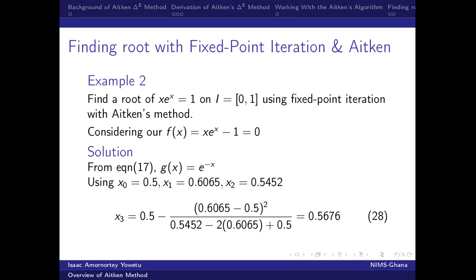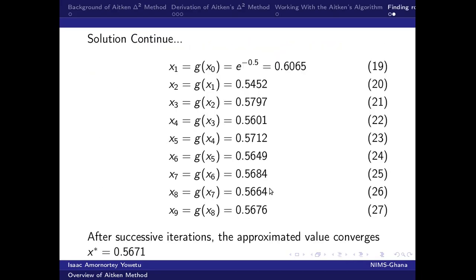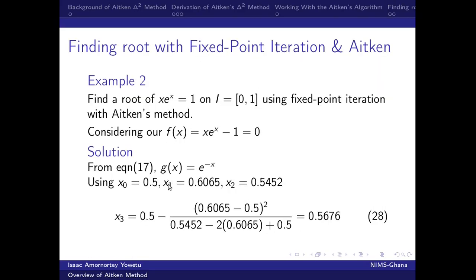We now move ahead to look at solving the same problem. But this time around, we want to incorporate the Aitken's method into the fixed point iteration. So, with our initial guess here, with our initial guess x0 here, from the fixed point iteration, we happen to get our x1, x2, which we have it here. We now, getting these three successive terms, we substitute it into the Aitken's algorithm, which eventually happens to get x3.